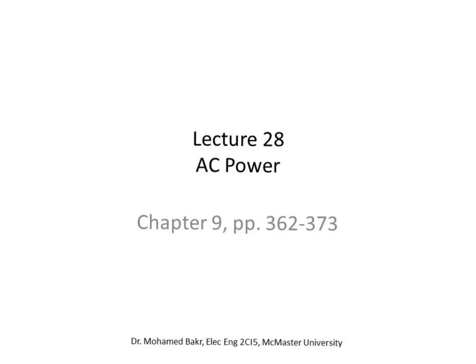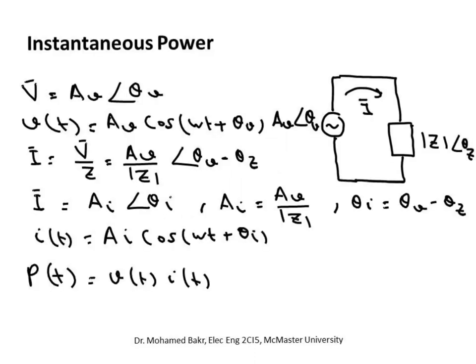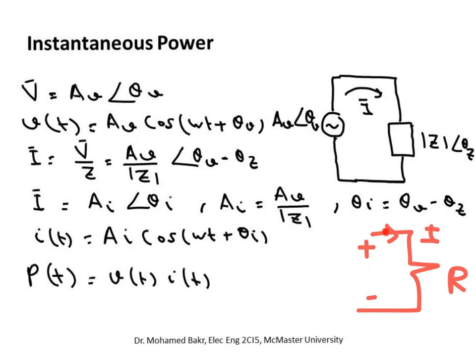This material is from chapter 9, from the pages shown here. We discussed power already for DC circuits — we know that power is a product of voltage and current when current is flowing from positive to negative terminals. If you have a resistor and current I flows from positive to negative, that load dissipates power equal to V times I, or V squared over R, or I squared R. This was the DC case with no time variation.